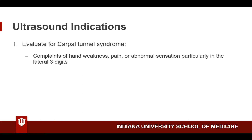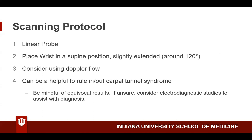Indications for ultrasound include evaluating for carpal tunnel syndrome in patients with complaints of hand weakness, pain, or abnormal sensation, particularly in those lateral three digits. For the scan, we use a linear high-frequency probe for good resolution, placing the patient's wrist in a supine position, slightly extended to around 120 degrees. Doppler flow around the median nerve can provide additional indication of inflammation. Results should always be interpreted alongside exam, history, and electrodiagnostic studies if needed.